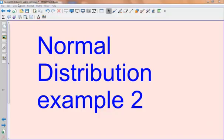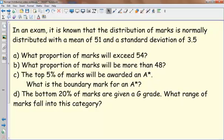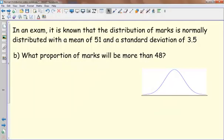So in this second example, we're looking at the same exam question again, but we're going to focus on part B. With a mean of 51 and a standard deviation of 3.5, what proportion of the marks will be more than 48?